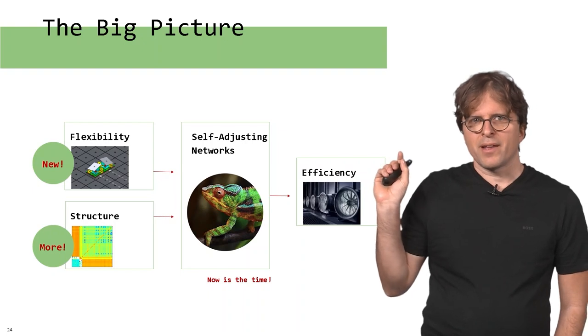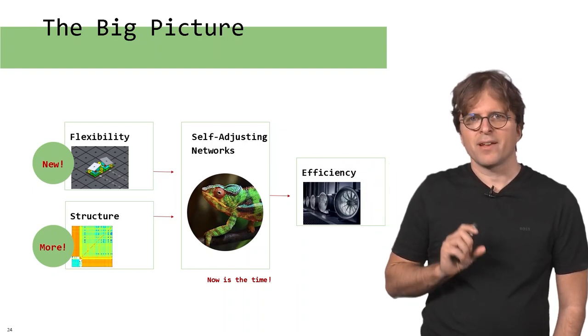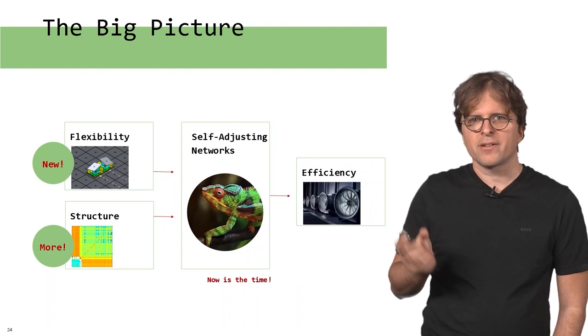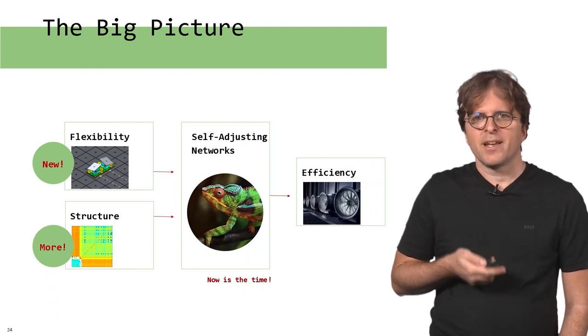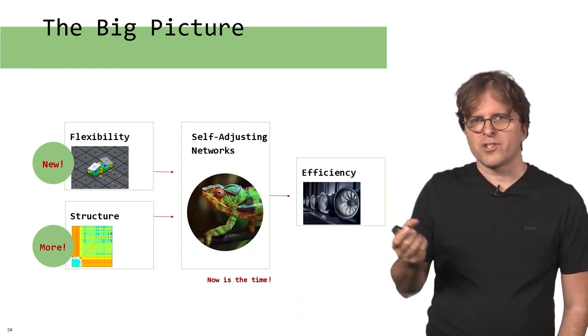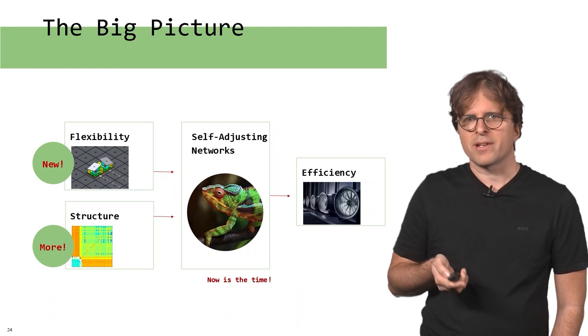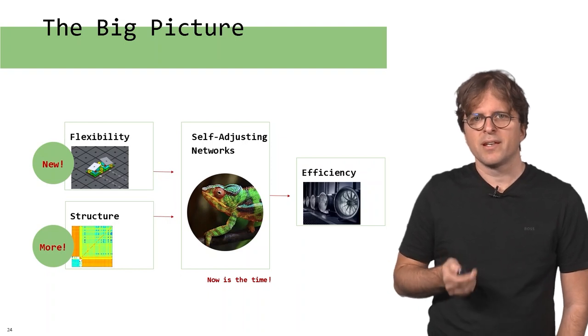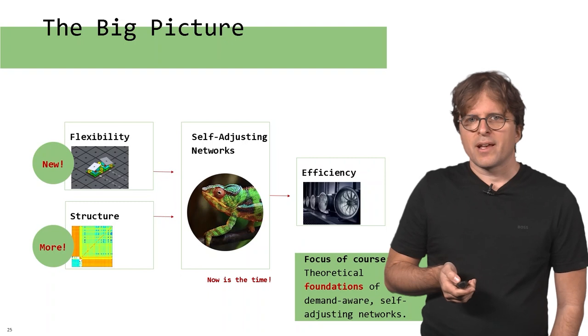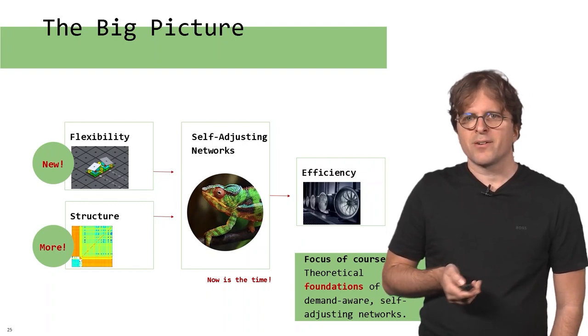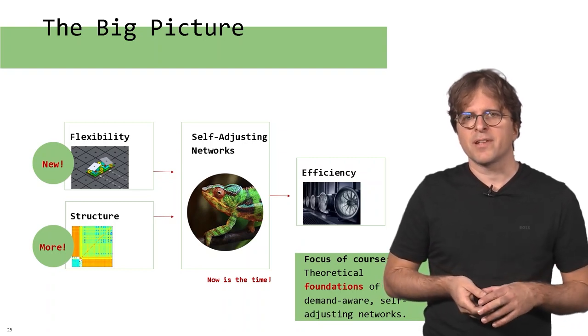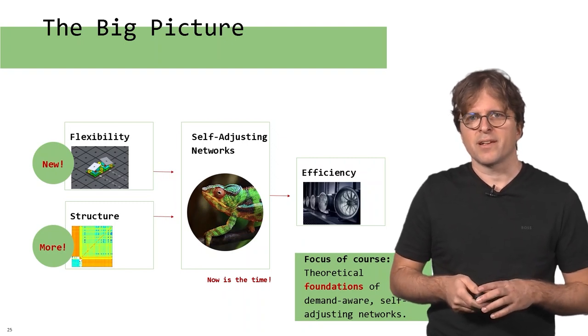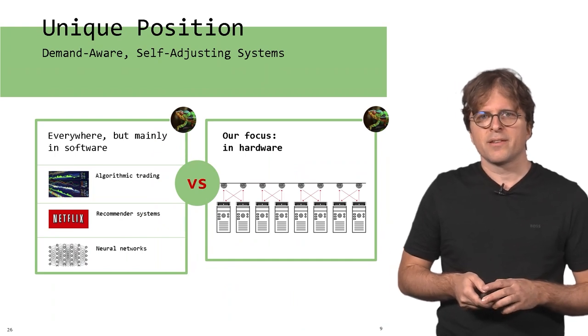So the big picture is here. On the one hand, we have this new technology, this flexibility that we get, and then we have these measurements showing structure in traffic patterns. Putting this together gives the vision of self-adjusting networks. Hopefully with this adjustment, you can improve efficiency, improve performance, or other metrics of interest. This is really the right time to do this because this technology is just emerging. In this course, we'll mainly focus on the theoretical foundations of demand-aware networks, of self-adjusting networks, and also talk about metrics, algorithms, and the foundations of this vision.